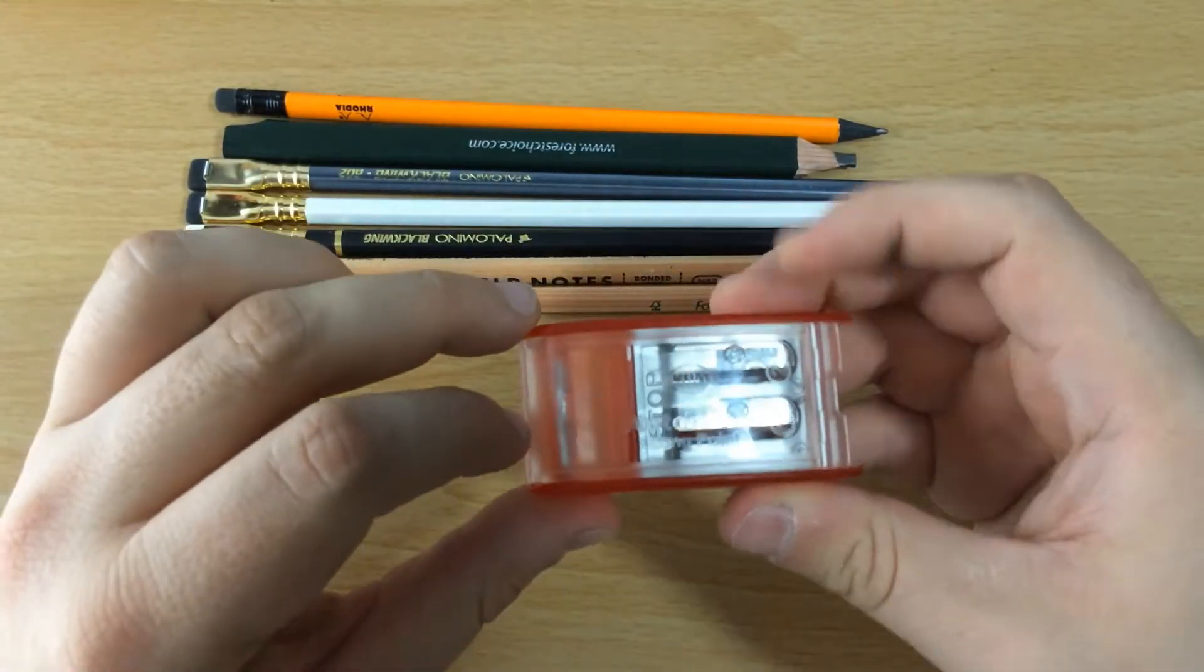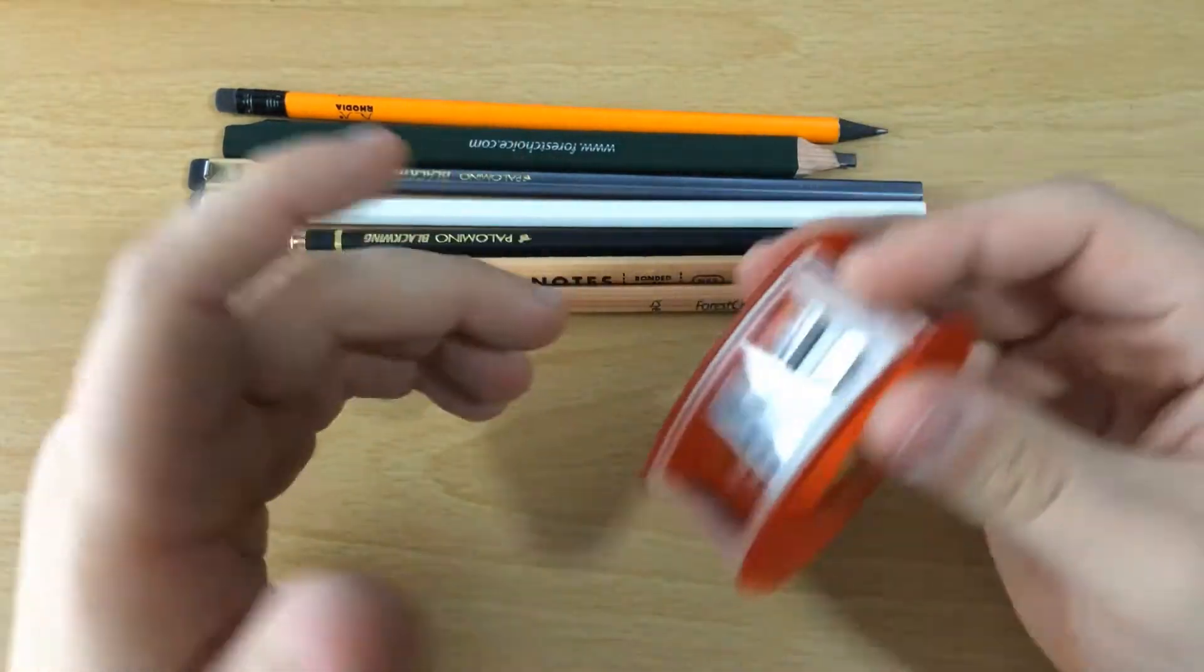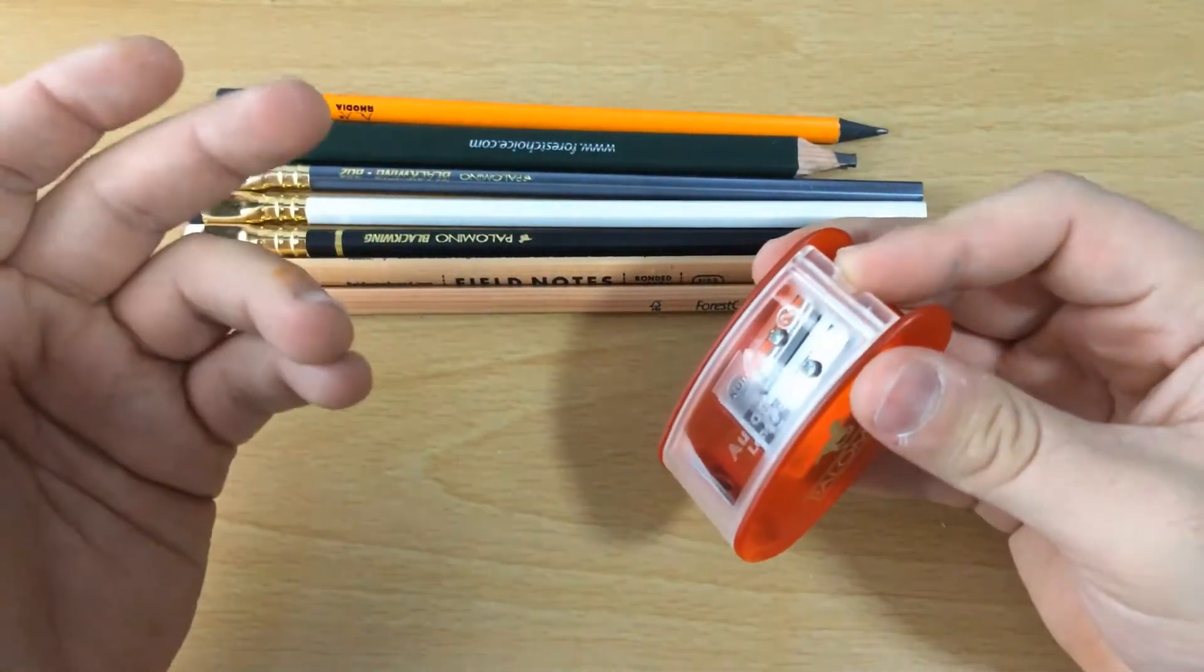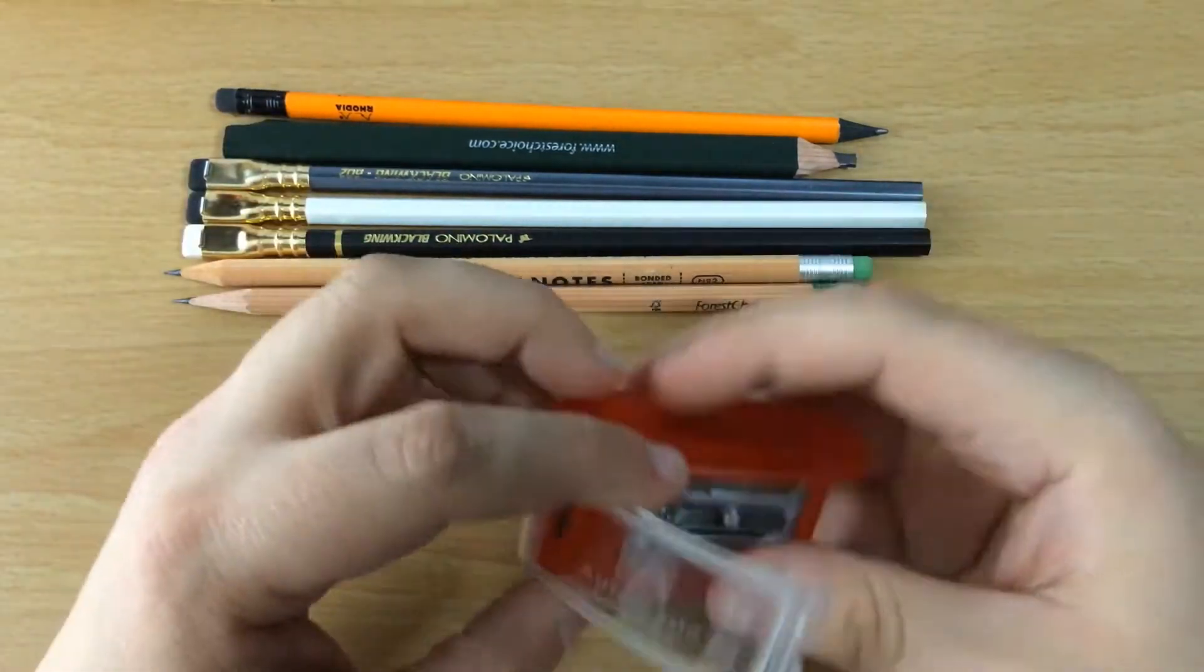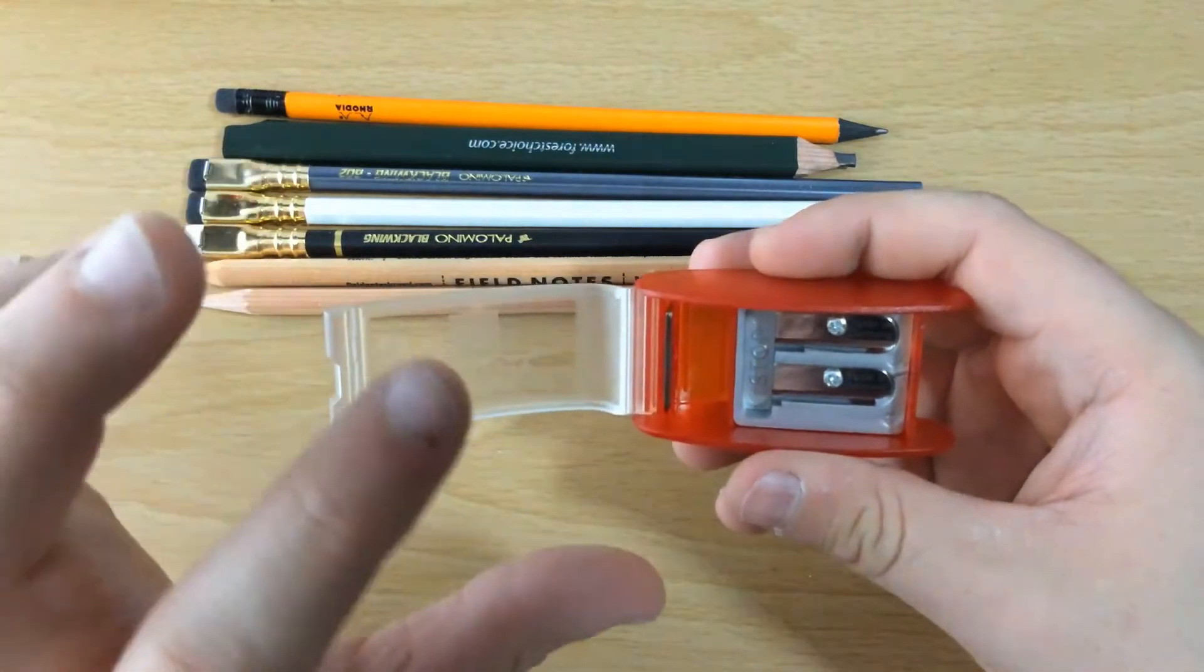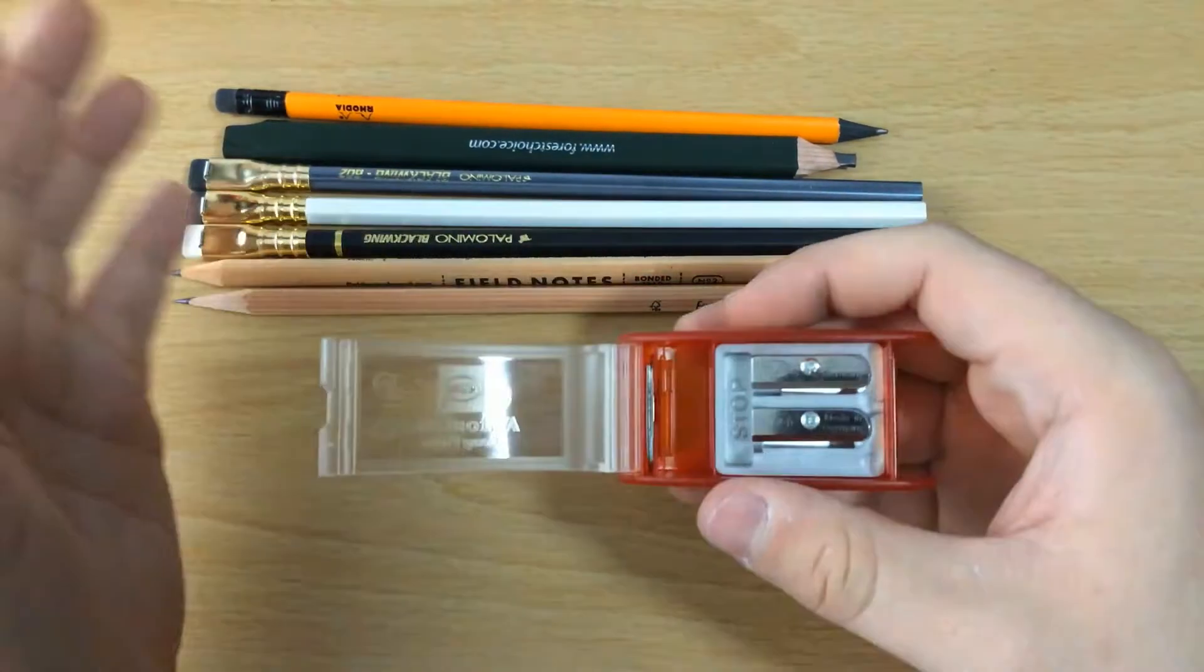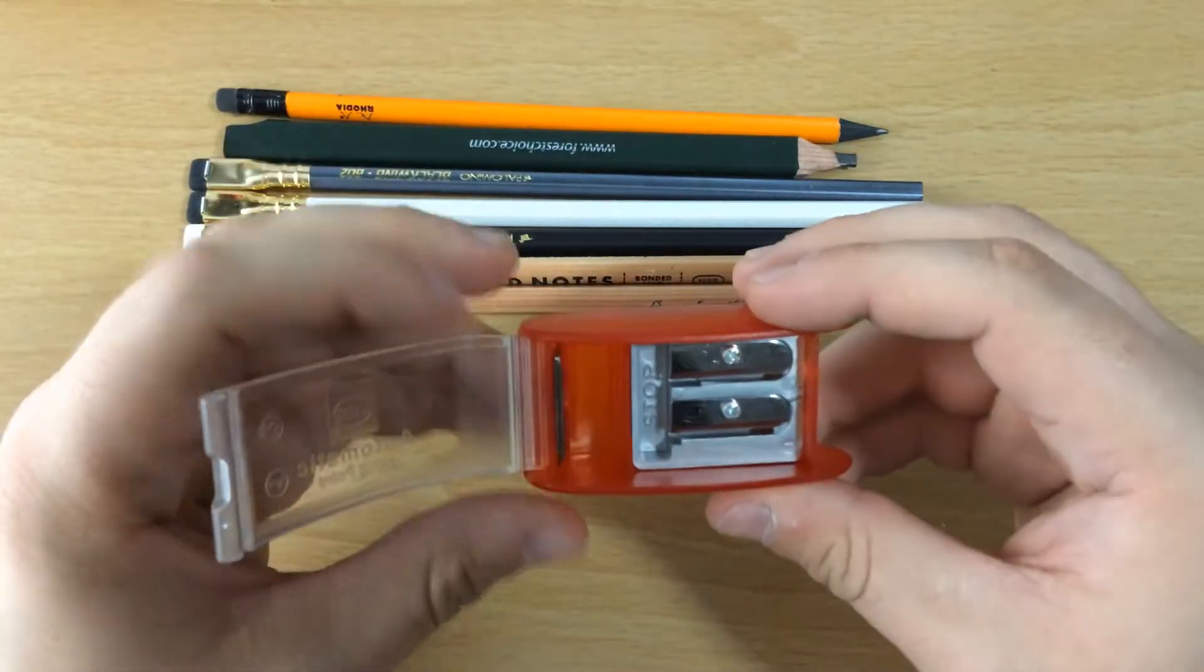It has the clear lid right here so you can see the shavings, empty it out when necessary. You don't have to be over a trash can while you're sharpening your pencils. You can just sharpen it and then dump it out later on. It doesn't have a huge compartment here, but it'll suit you fine for a full day's worth of pencil sharpening at least.